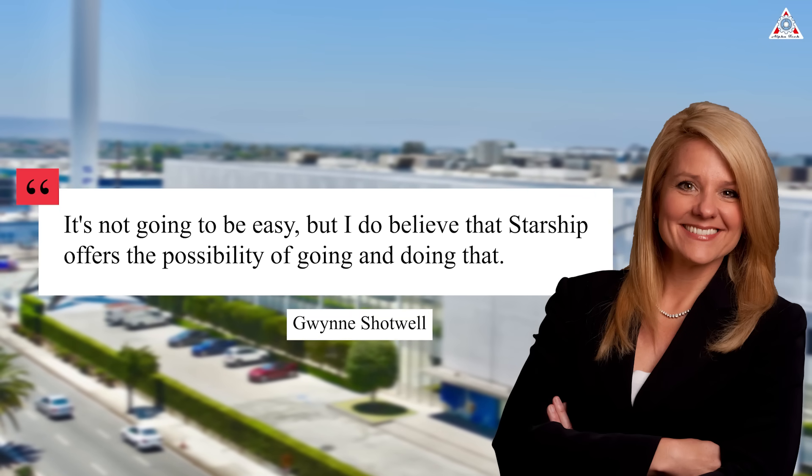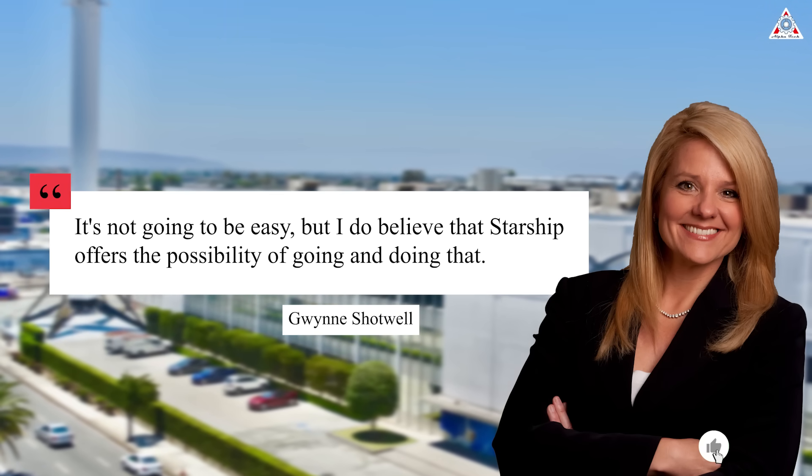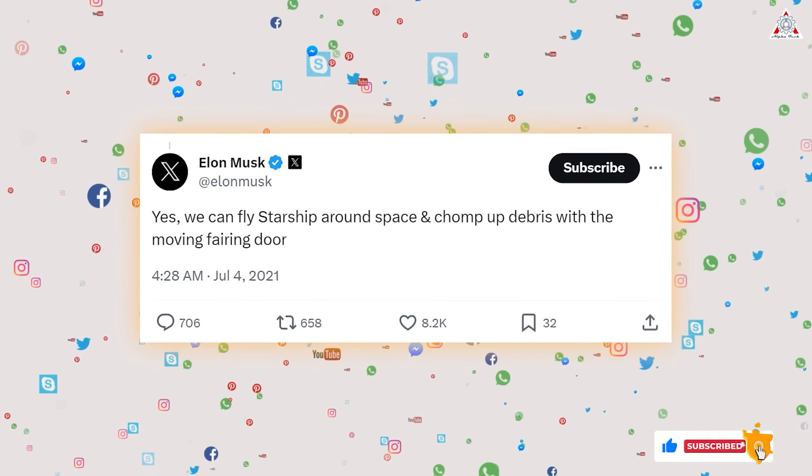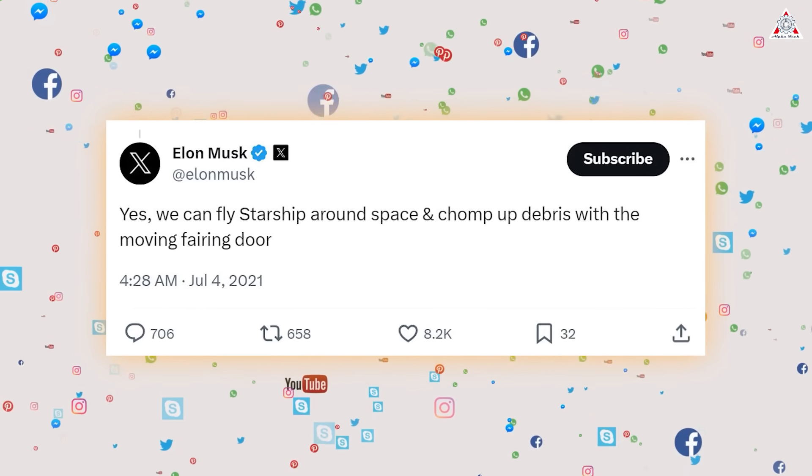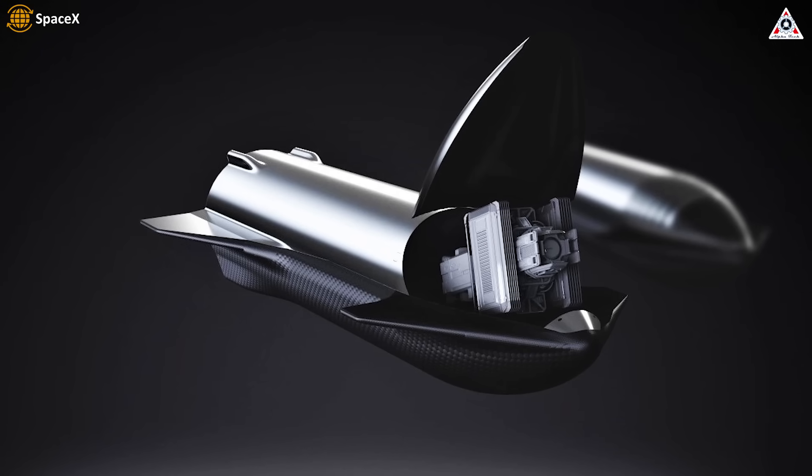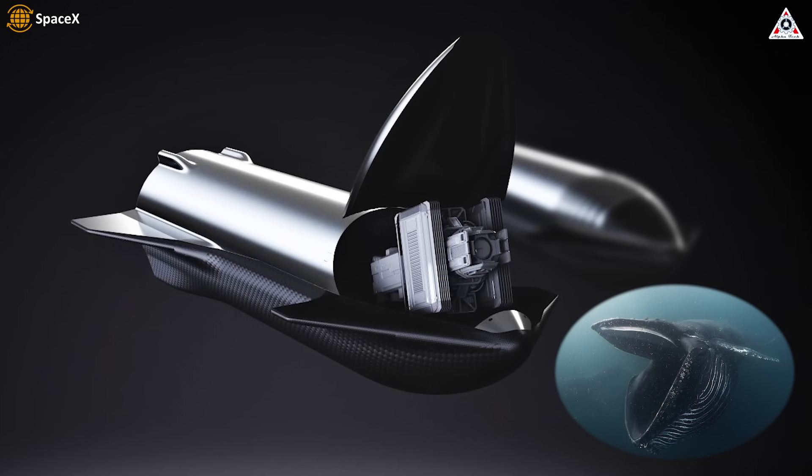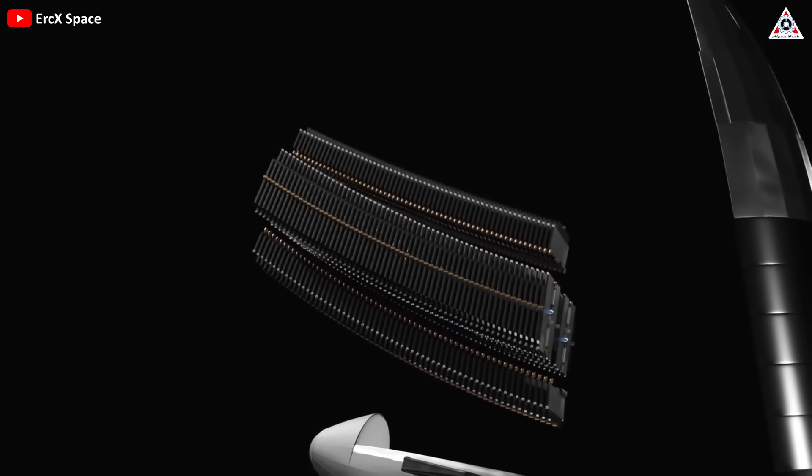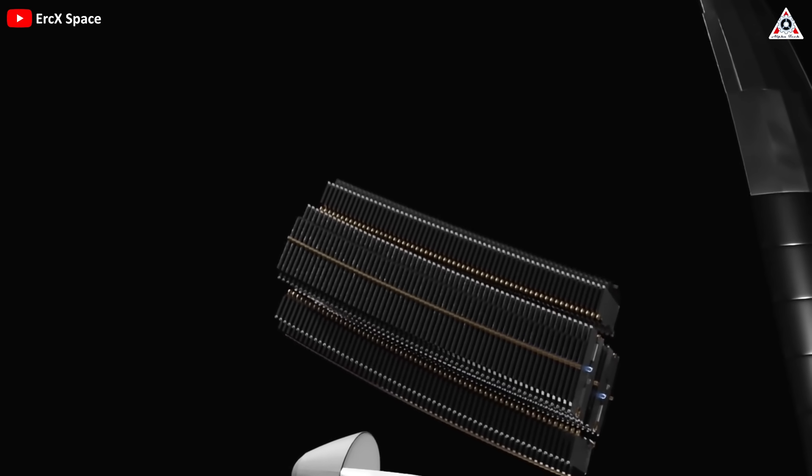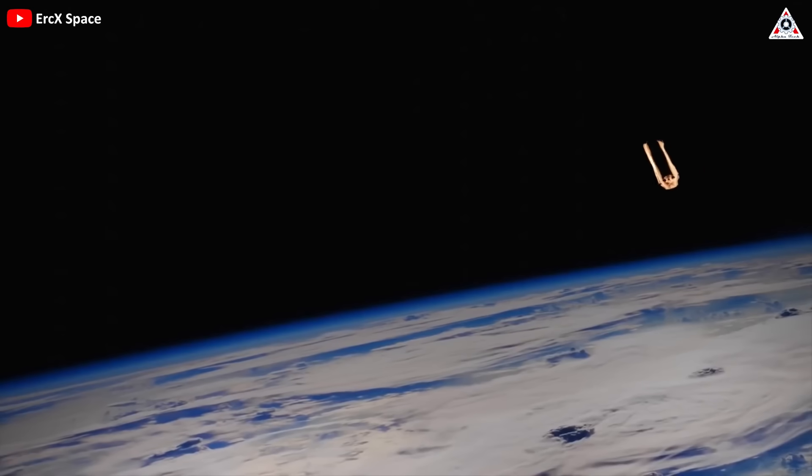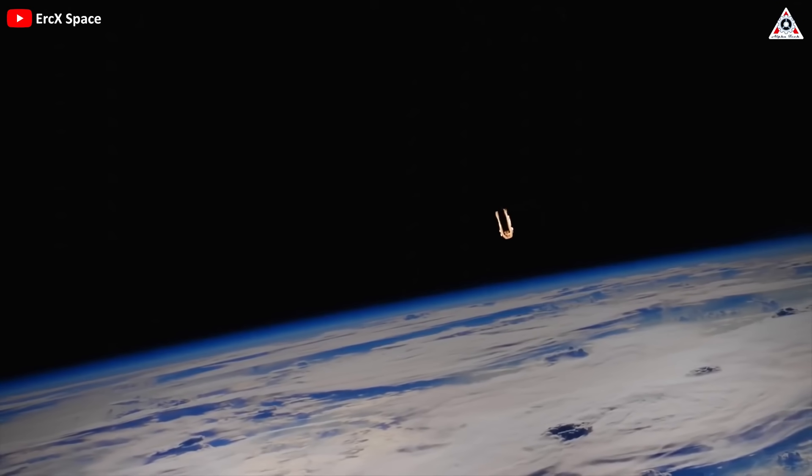This was confirmed by Gwen Shotwell in 2020. It's not going to be easy, but I do believe that Starship offers the possibility of going and doing that. Then, in 2021, Elon Musk also tweeted that they can fly Starship around space and chomp up debris with a moving fairing door. In basic principle, Starship will open its fairing compartment the same way giant fish hunt their prey in the ocean. It'll open up to suck junk into the payload bay until it's full and then take it to a designated place, possibly back to Earth, to burn it.